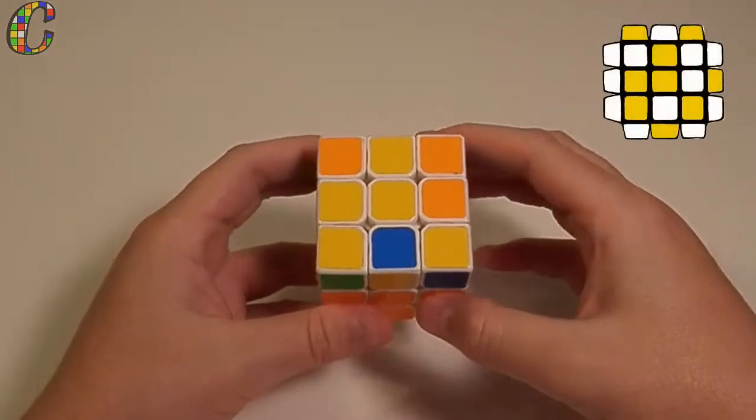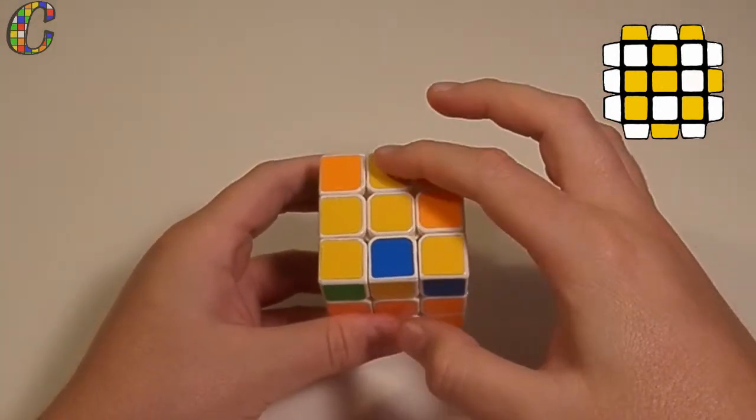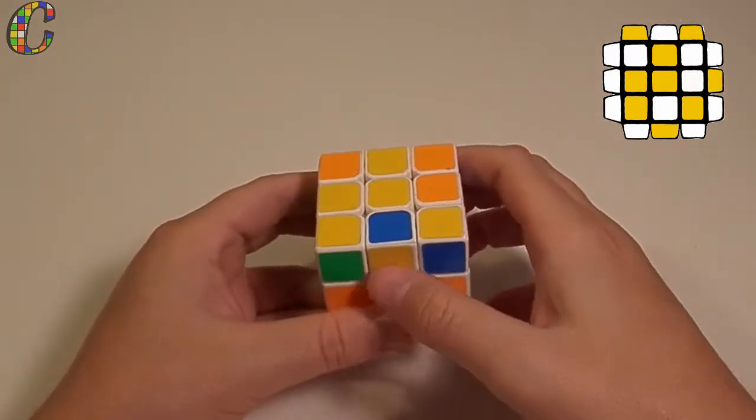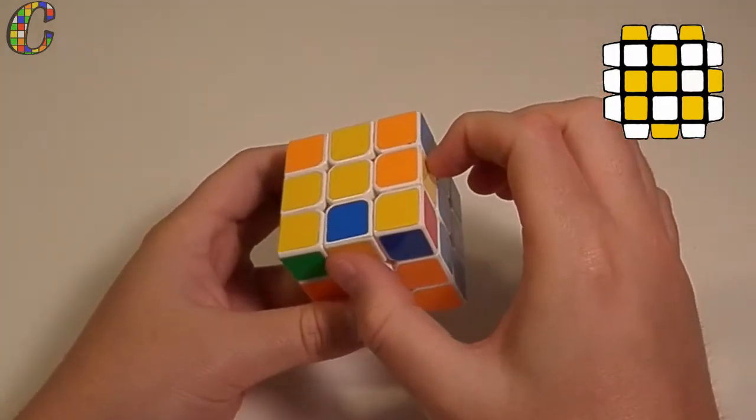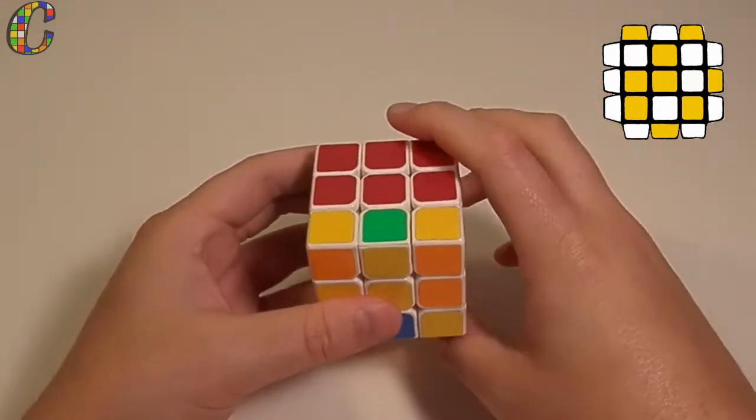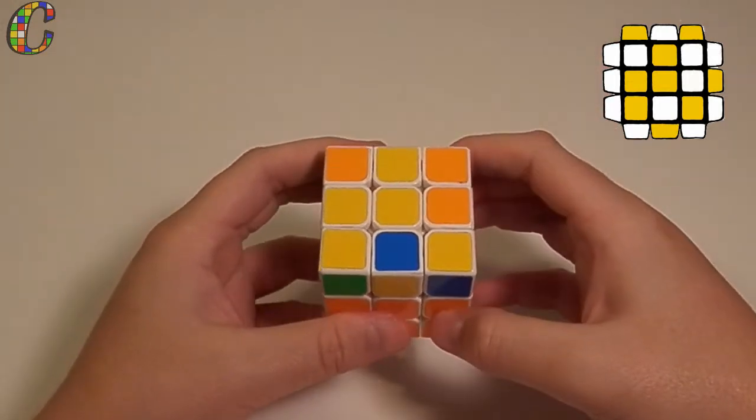This is OLL number 41, and the way you recognize this case is by seeing this glider shape on top, oriented like this. This edge and this edge are both facing out, and your headlights are in the back. Once you have the cube oriented like this, you do this algorithm.